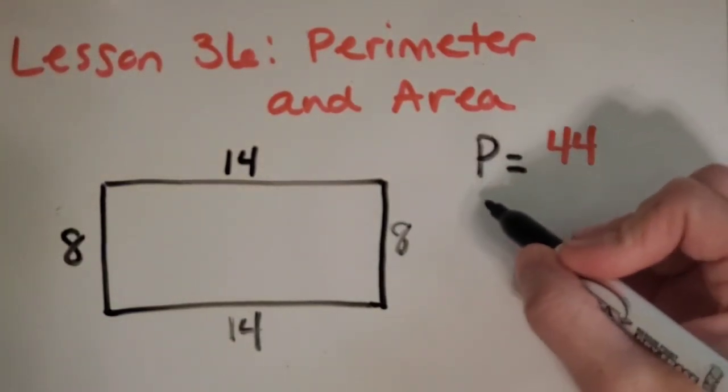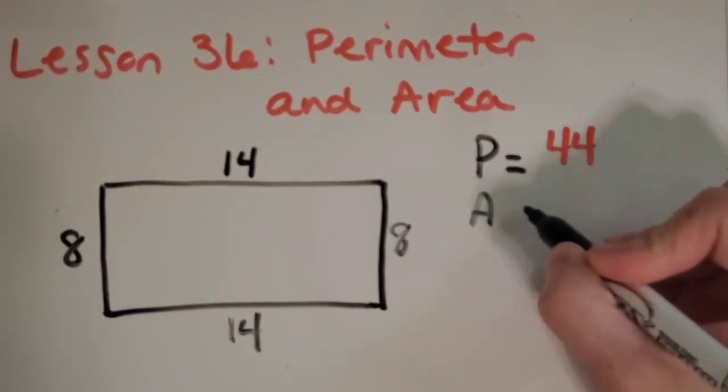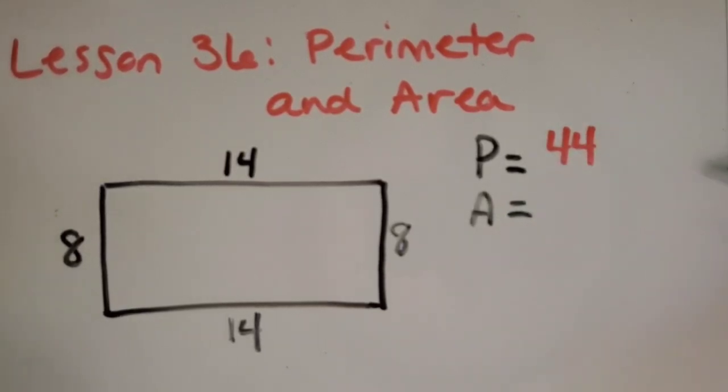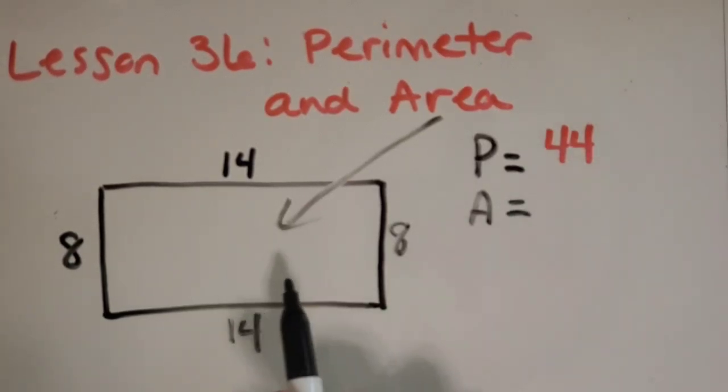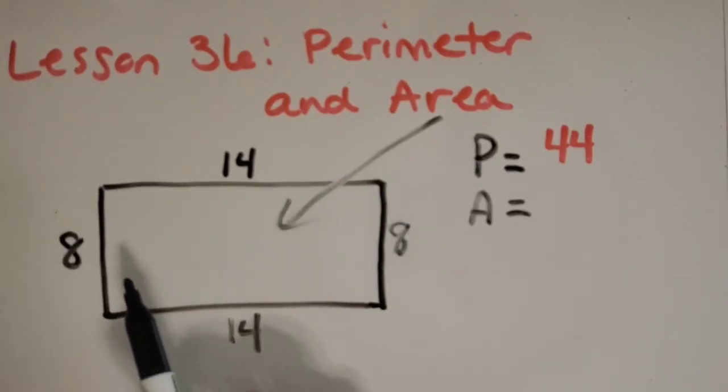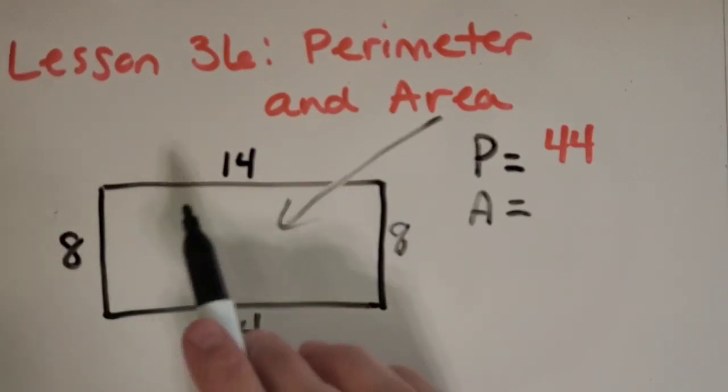Great job on the perimeter. Now we're going to work on the area of the shape, area of the rectangle. And we talked before about how the area is the inside. And so we can also learn a little bit about the way that you probably used to find area and also a good strategy for fifth grade.